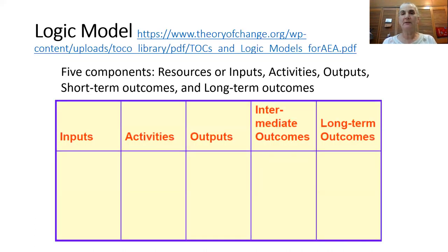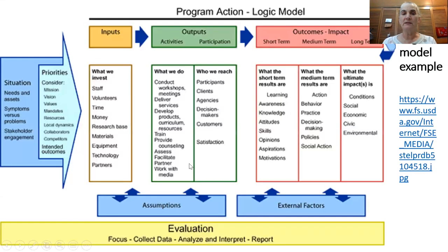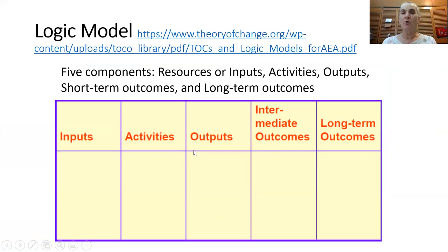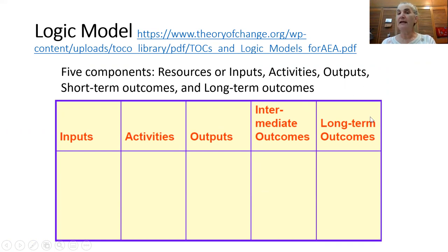Here's a typical template for a logic model with five components. We look at the resources or inputs used in the project to carry out the activities. There are outputs that result from those activities — such as the number of people trained — which lead to intermediate outcomes. For example, if people are trained in a workshop on how to plant trees, they will be planting more trees, and the long-term outcome may be more tree cover in a given area.